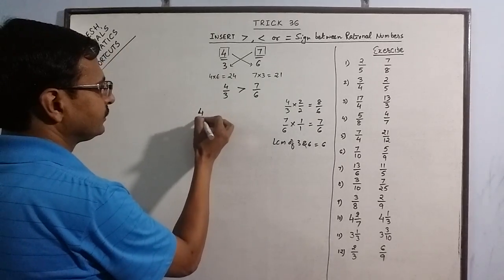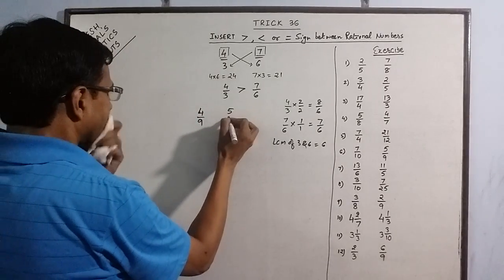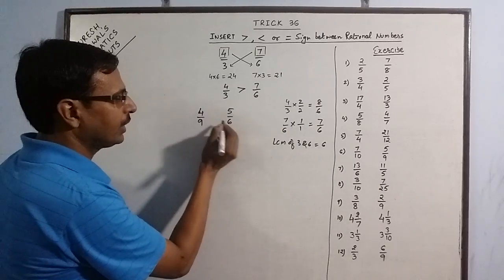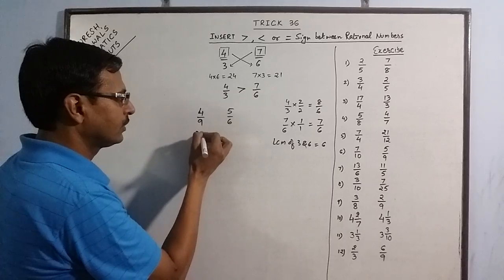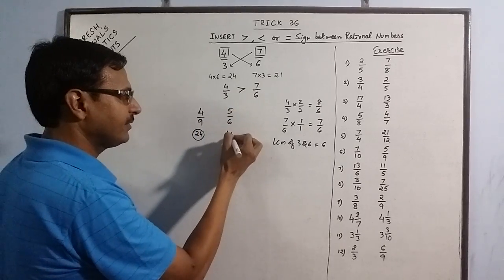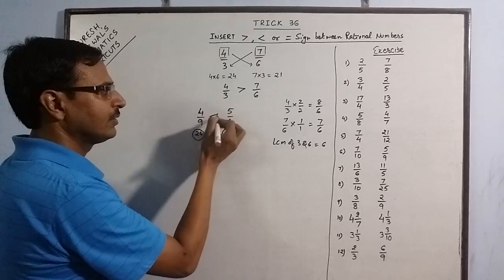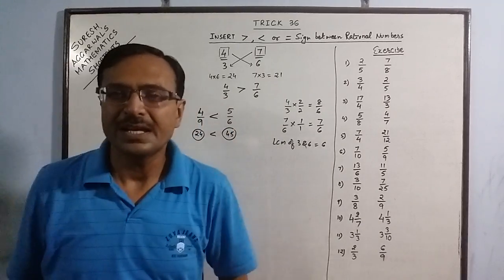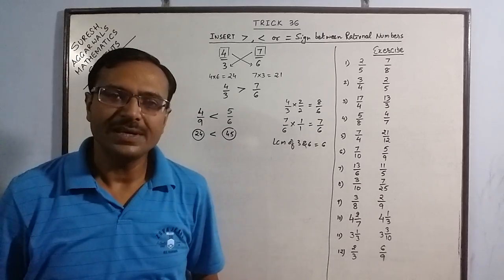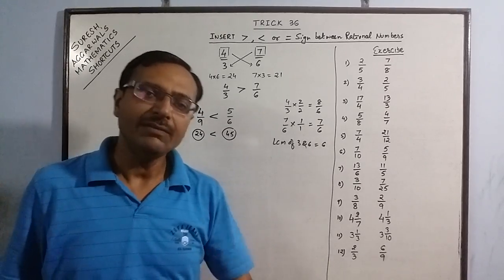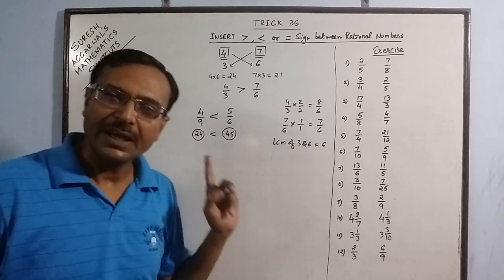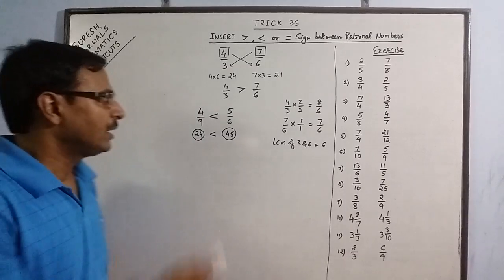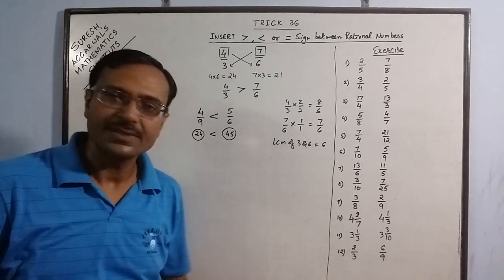Let us take one more example: 4/9 and 5/6. Again do the same cross-multiplication: 4 times 6 is 24, and 5 times 9 is 45. So obviously 45 is greater, meaning 4/9 is less than 5/6. Things become so simple and easy with shortcuts, and even junior students can test whether they have put the right sign between two rational numbers by cross-multiplying and checking which product is greater.